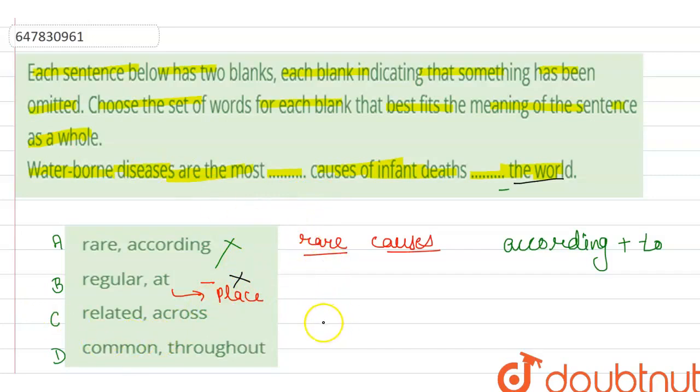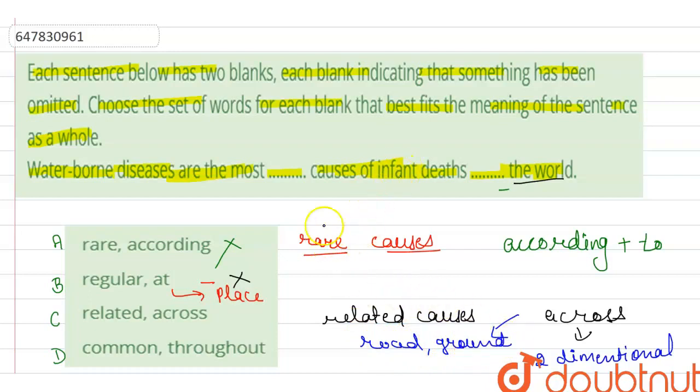Option C: the most related causes. Related causes. This is also incorrect, and then see across. We basically use across when there is a two-dimensional space like a road or ground. For three-dimensional space, what do we use? Through.